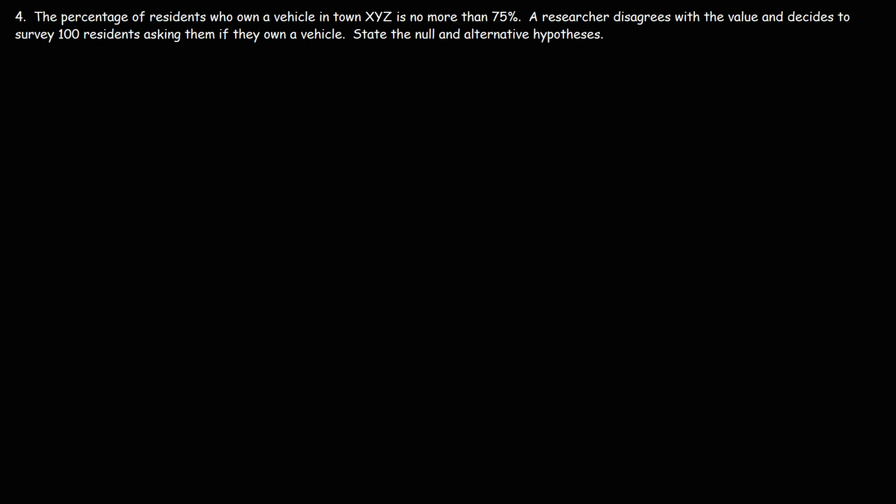Number four: the percentage of residents who own a vehicle in town XYZ is no more than 75%. A researcher disagrees with this value and decides to survey 100 residents asking them if they own a vehicle. State the null and alternative hypotheses.